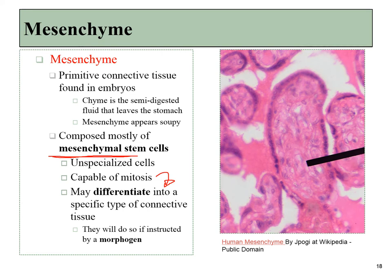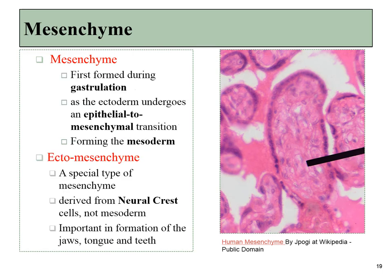Mesenchymal stem cells are undifferentiated stem cells capable of undergoing mitosis and later differentiating into a wide array of different types of connective tissue cells. They will do so in response to a signal known as a morphogen. Mesenchyme is first formed in a process called gastrulation. Initially an embryo only has epithelial cells, so to form this new type of tissue, some of those epithelial cells must transition into mesenchymal cells — we call that an epithelial to mesenchymal transition. Ecto-mesenchyme comes from a specialized type of neural tissue called neural crest cells, which migrate into the jaws and differentiate into parts of the teeth.